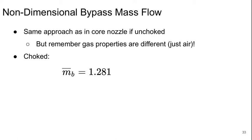Now we can look at the non-dimensional bypass mass flow. Basically we use the same approach as in the core nozzle if it's unchoked. But of course the choked non-dimensional mass flow is different because it's air and not combustion products.